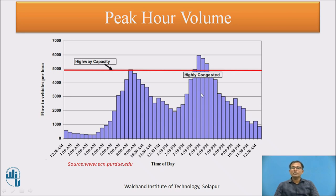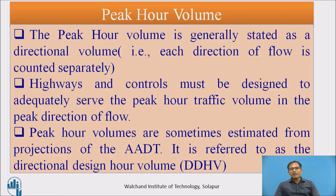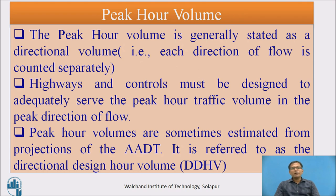If the facility is not able to cater to this traffic, there is a possibility of congestion or queue formation at the peak hour. We need to consider these peak hours and design facilities according to peak hour volume. Peak hour volume is generally stated as directional volume, where each direction of flow is counted separately. If there is no balance between left-side and right-side traffic, we can calculate peak hour volume direction-wise.